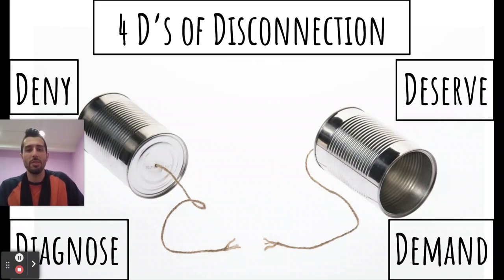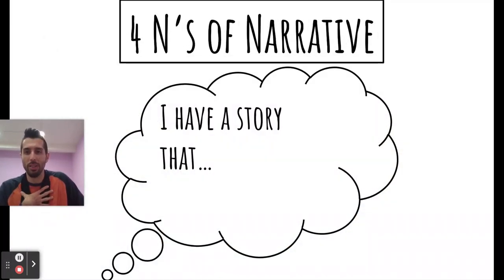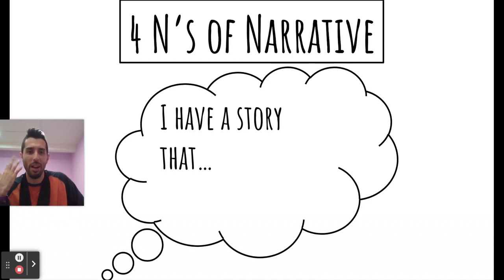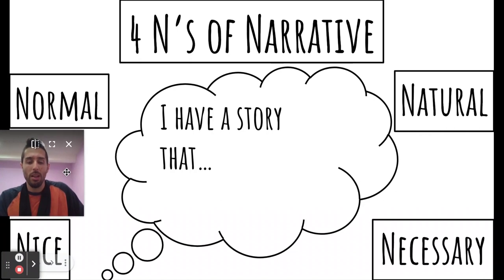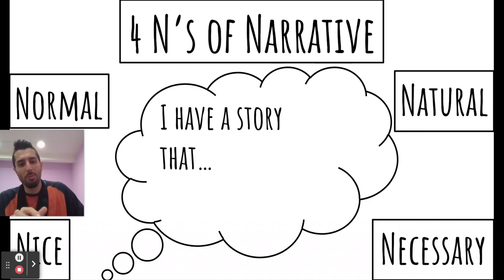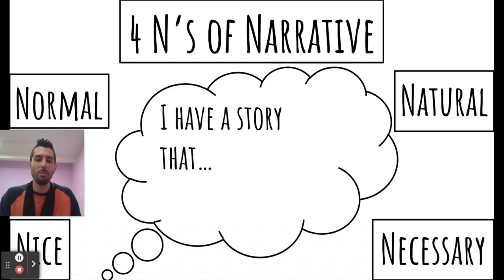The four D's of disconnection have some overlap with another model — the four N's of narrative, which come from Melanie Joy, a vegan activist. A narrative in this sense means: 'I have a story that...' The four N's are normal, natural, nice, and necessary. Normal and natural overlap a little with deny and diagnose — if something is normal or natural, the implied logic is 'what's wrong?' Those are common justifications, though they're essentially logical fallacies.